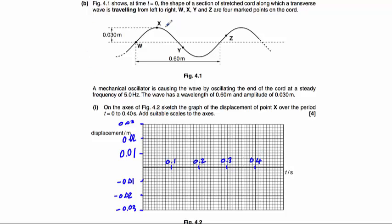Now let's take a look. Point x at time 0 is at its amplitude, the maximum displacement of 0.03. So our first point on the graph is up here. We know the wave has a frequency of 5 hertz. We don't know the time period, so we need to use the equation: time period equals 1 divided by frequency, which gives us 1 divided by 5, which is 0.2 seconds. After 0.2 seconds, x will be back up here again.